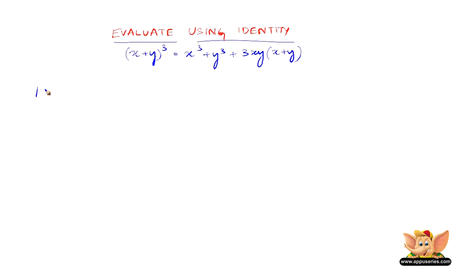So let us consider 104³. Now, 104³ can be written as (100+4)³. This is of the form (x+y)³, where 100 is x and 4 is y. So all we have to do is 100³ + 4³ + 3×100×4×(100+4).